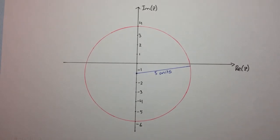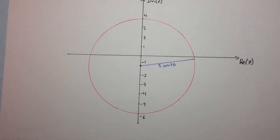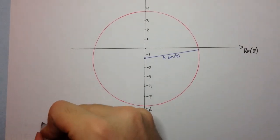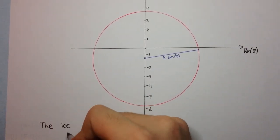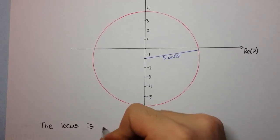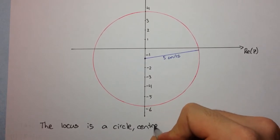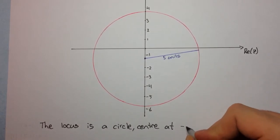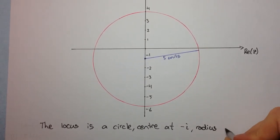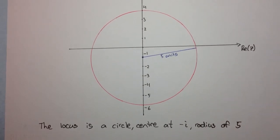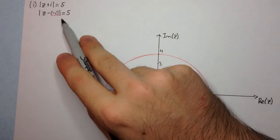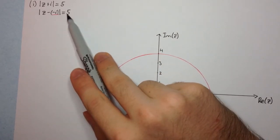Now we've sketched it. I guess we should describe it since the question says to sketch and describe. So, in words, the locus is a circle, center at minus i, and radius of 5. And that can be read directly off our standard form. So here we have our center, and here we have our radius.